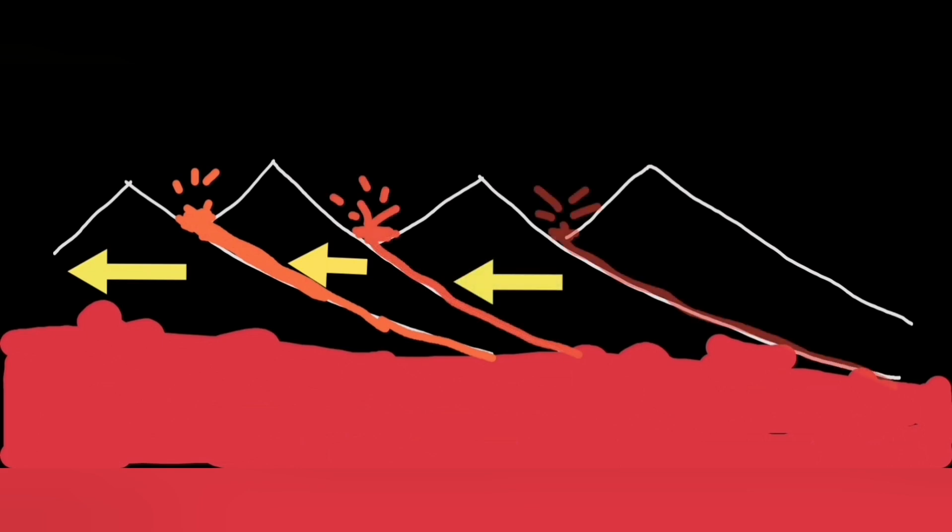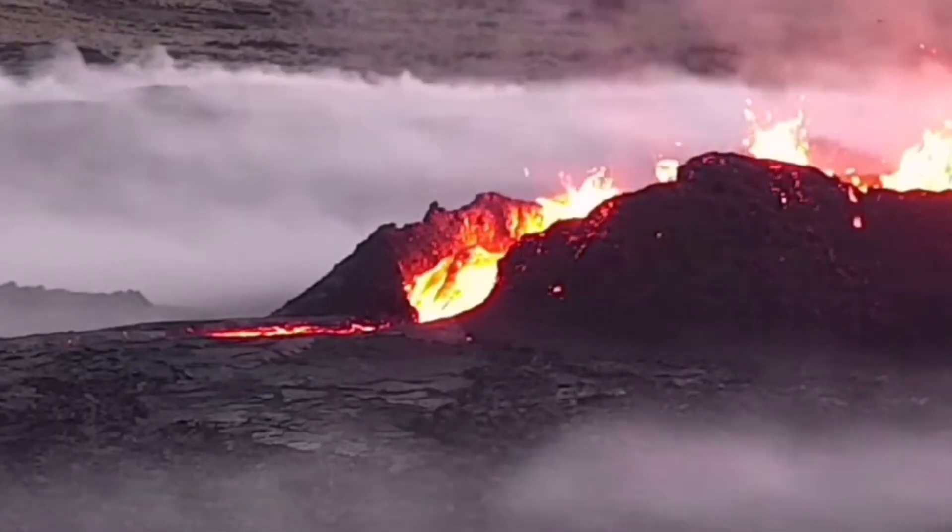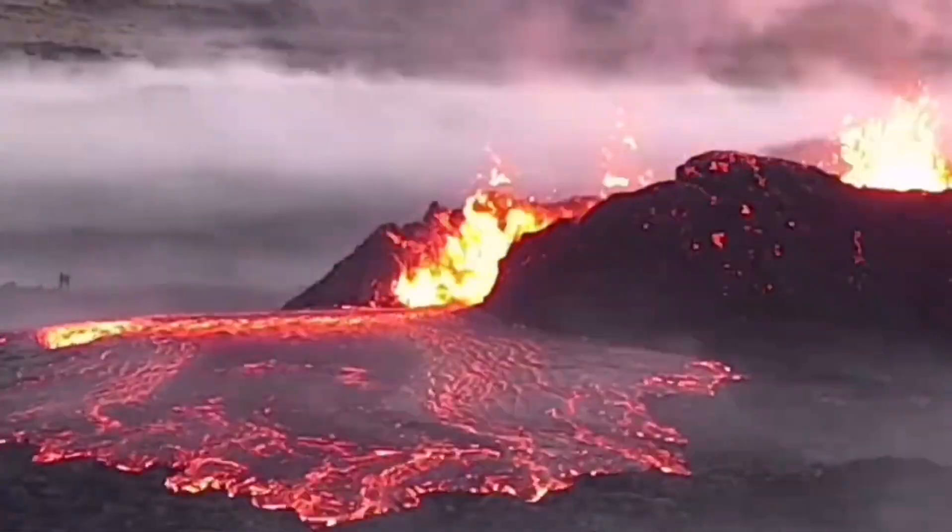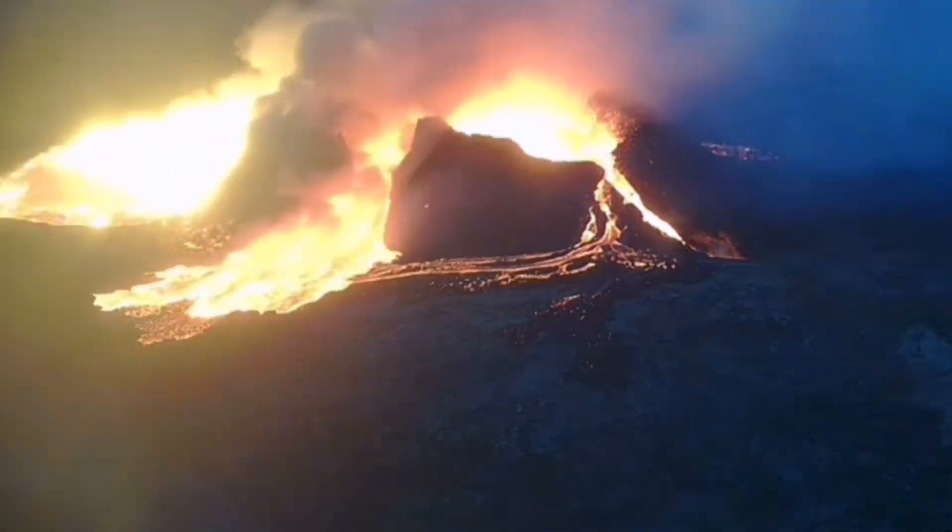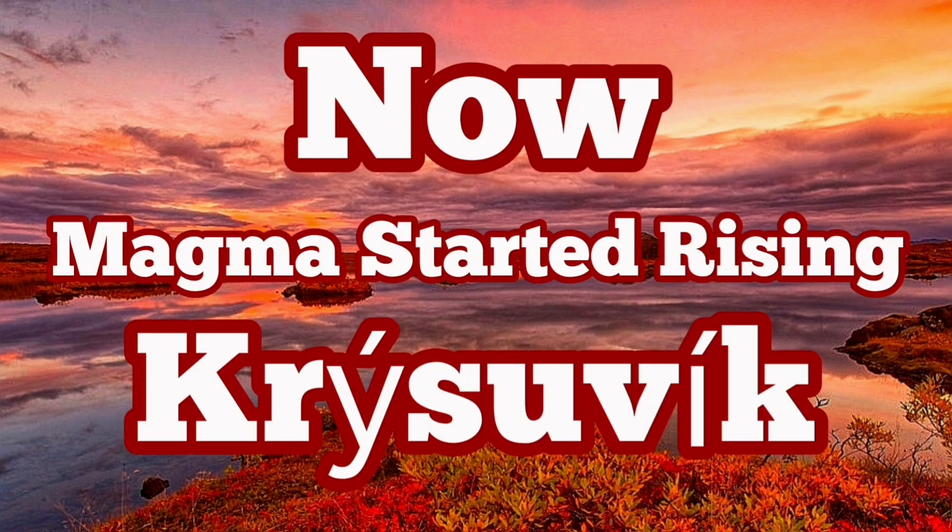This is a scary situation because the Svartsengi Blue Lagoon Grindavík volcanic system is now active. And the magma movement in that direction can actually increase the chances of risk to the buildings and structures in the vicinity of those areas, including Reykjavik, the capital of Iceland.